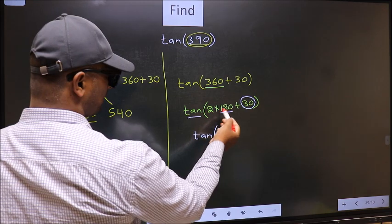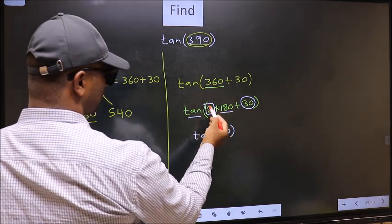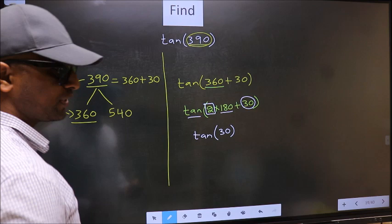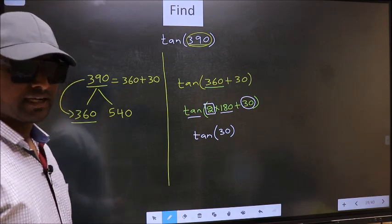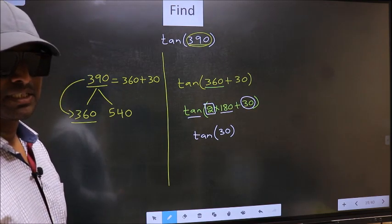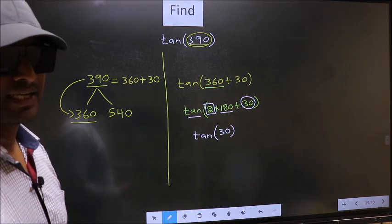To answer that we should look at the number before 180, that is 2, and 2 is even. And all the even multiples of 180 they lie in either the first or the fourth quadrant.